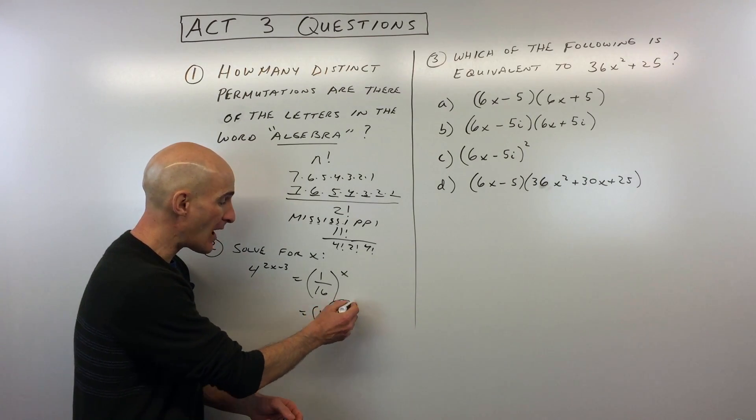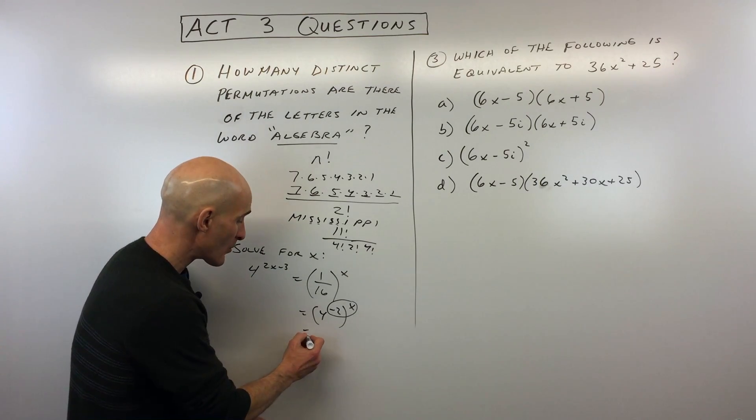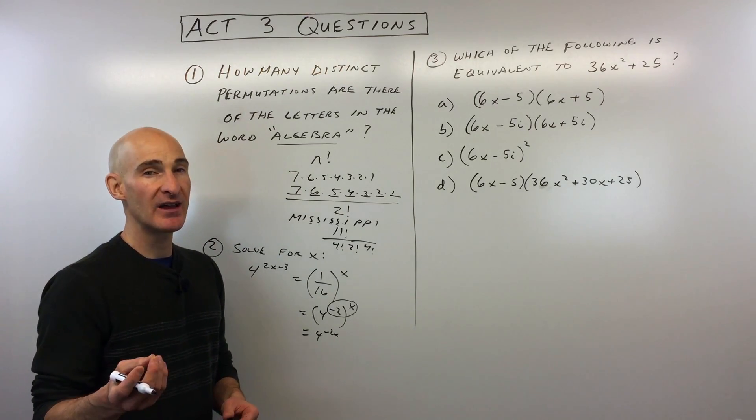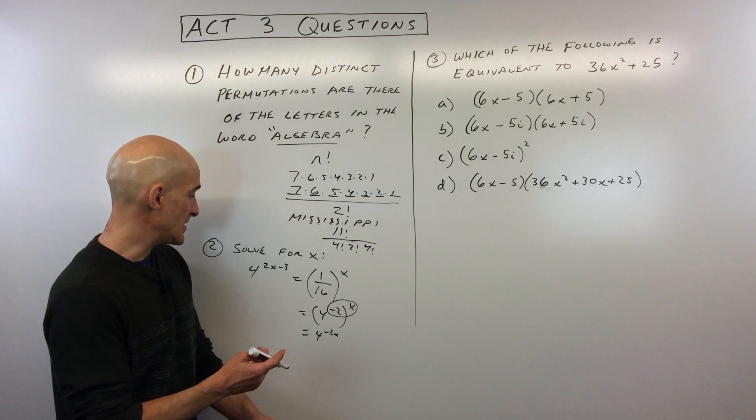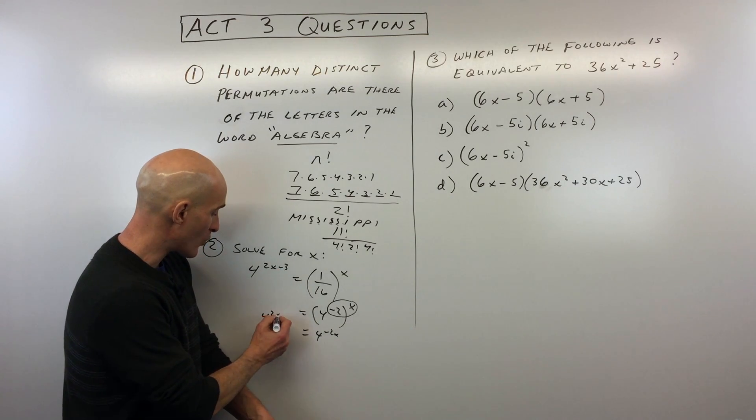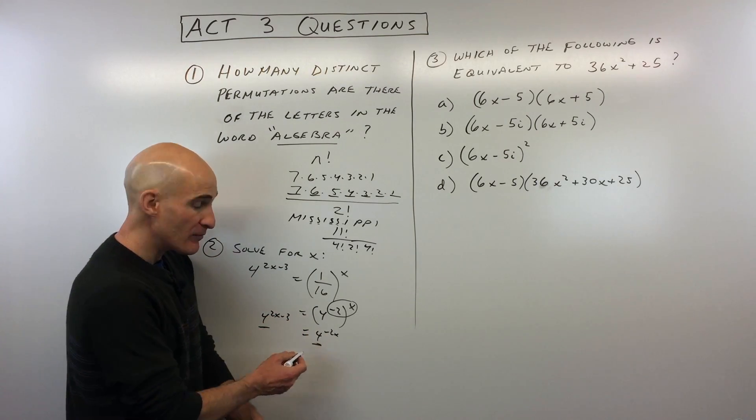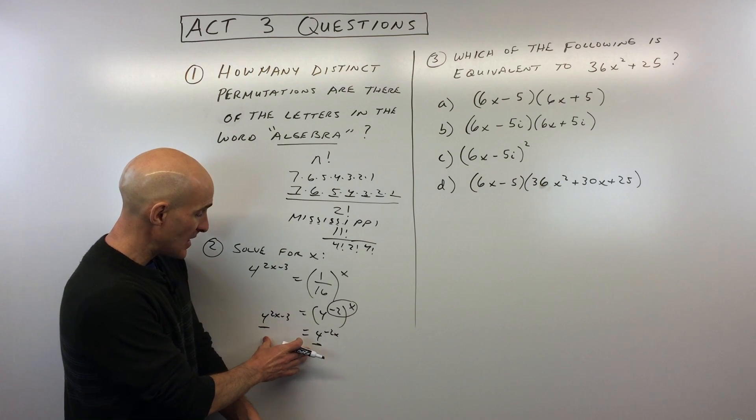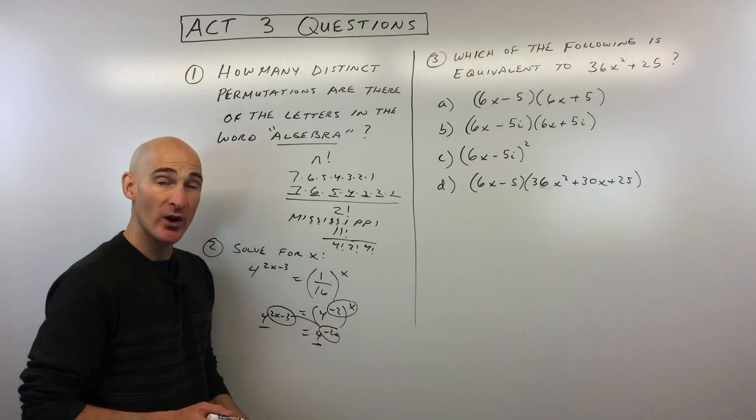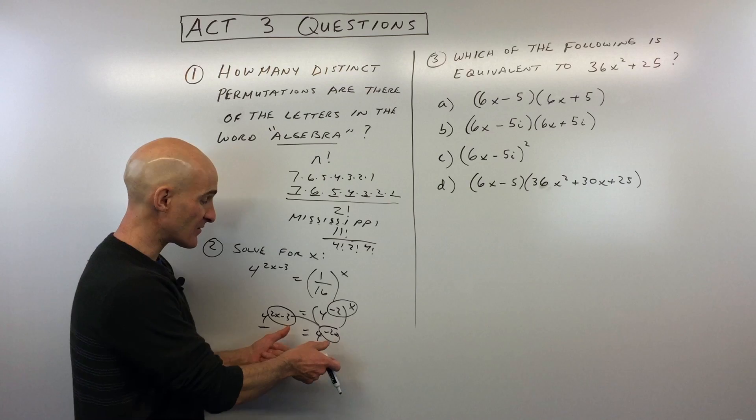Now when you have a power to a power, what do you do? You multiply. So you might want to review your rules of exponents if some of this seems challenging to you, but they definitely test you on exponent rules on the ACT. So now the four to the two X minus three, I'm just going to bring that down on the left side of our equation. Now notice what we've got here. We've got base four, base four. They have the same base. So if the bases are the same, what we can do is we can set those exponents equal to one another. So the only way the left side and the right side are going to be equal if the bases are the same is if the powers are the same.